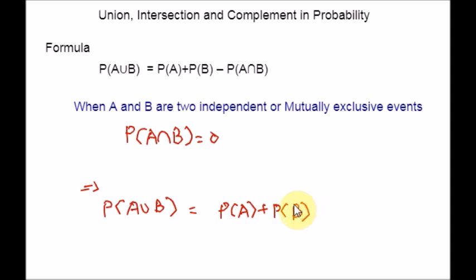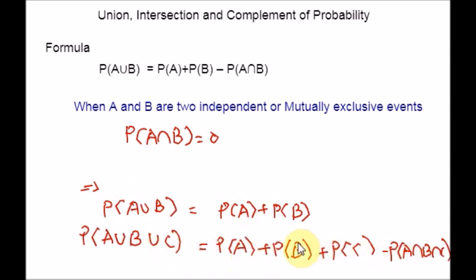Hope you are clear with this concept. What will happen if we have more than two independent events — for example, A, B, C? In that case, the union probability will be given by the same formula. Even if the number of events is more, you can apply the same concept and same formula. If they are independent, you can set the intersection part as 0. If they are not independent or not mutually exclusive, then you consider the intersection part.